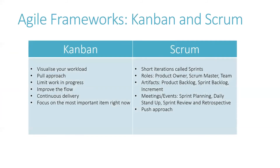A quick summary of the two frameworks: Kanban — visualize your workload, pull approach, limit work in progress, focus on the most important items, improve workflow, and continuous delivery. With Scrum — you deliver things at the end of the sprint, iterations are called sprints, you have defined roles, artifacts including product backlog, sprint backlog, and increment, defined meetings with specified attendees, and a push approach where the product owner pushes items from the product backlog into the sprint backlog.